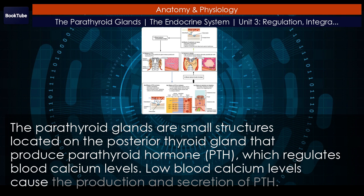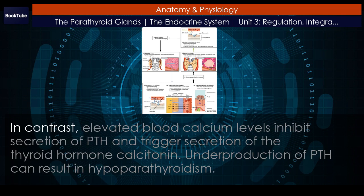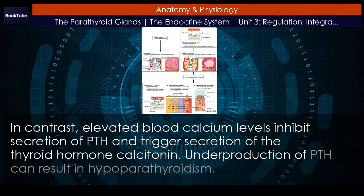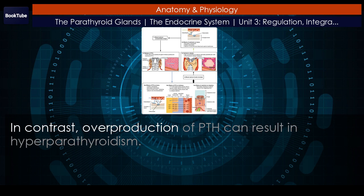Low blood calcium levels cause the production and secretion of PTH. In contrast, elevated blood calcium levels inhibit secretion of PTH and trigger secretion of the thyroid hormone calcitonin. Underproduction of PTH can result in hypoparathyroidism, while overproduction of PTH can result in hyperparathyroidism.